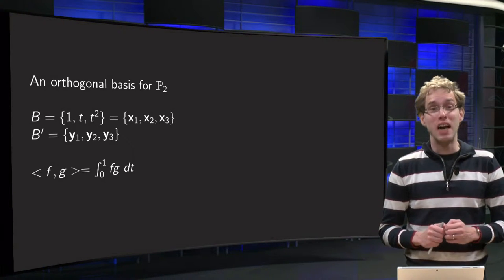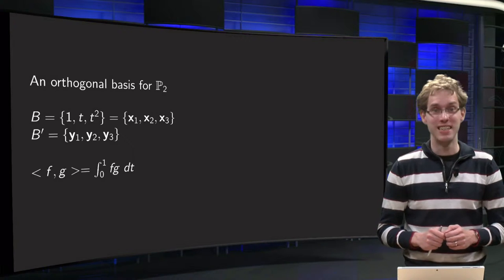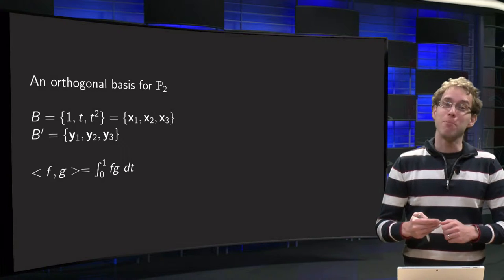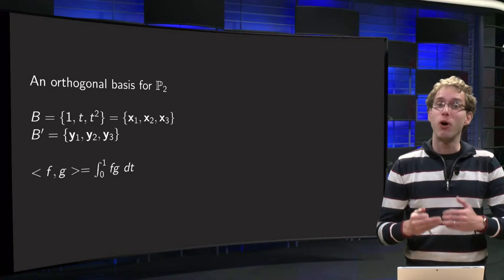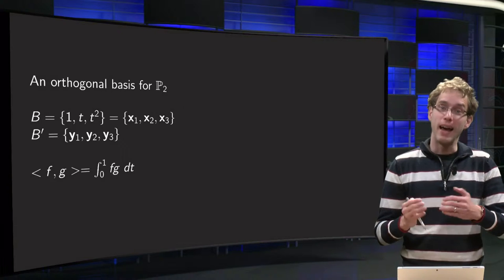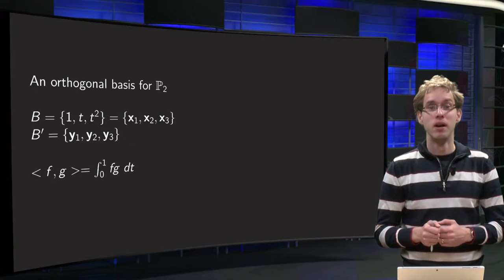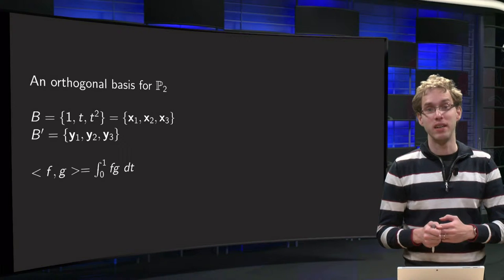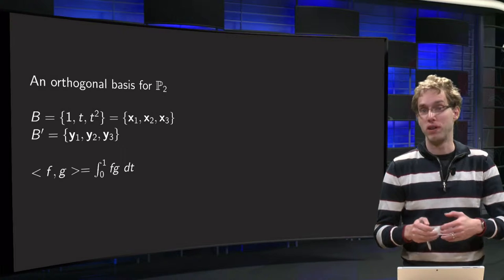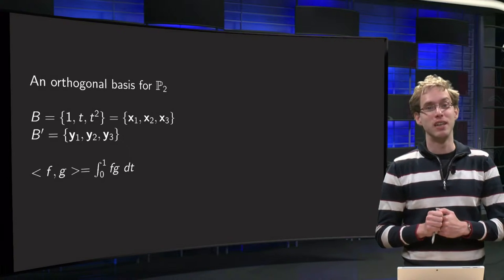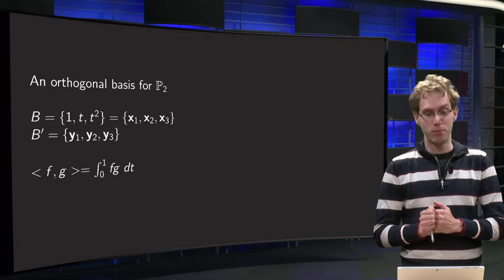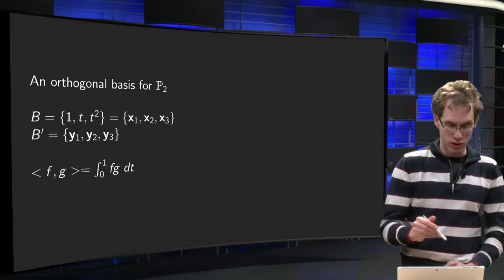An inner product allows us to compute distances, as we saw before, but also angles. In particular we have the notion of orthogonality of two functions. Two functions are called orthogonal if their inner product equals zero. But this also means that we can use Gram-Schmidt to obtain an orthogonal basis for, for example, p2, and that is what you will see in this video.